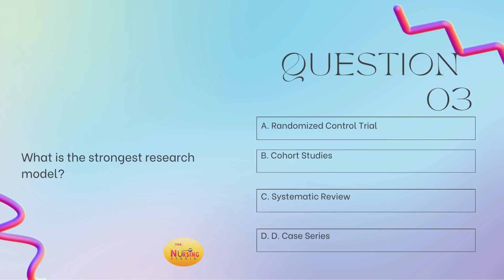And then lastly, question number three: what is the strongest research model? Is it A, a randomized control trial; B, a cohort study; C, systematic review; or D, case series? Take a moment and tell me what you got in the comments. This is simply based off of the research hierarchy pyramid — you need to know what it is and what comes in those orders, and that's how you're going to be able to determine strongest versus weakest. C is the best answer. The systematic review is at the top of the pyramid.